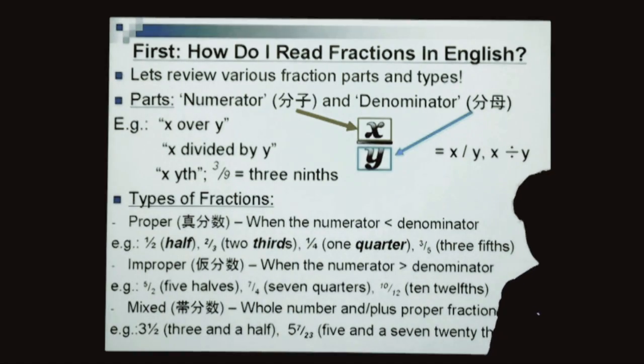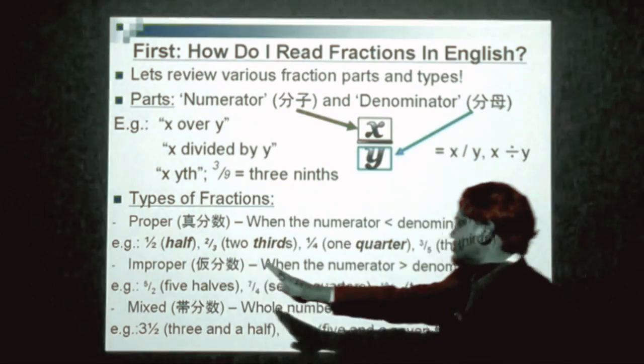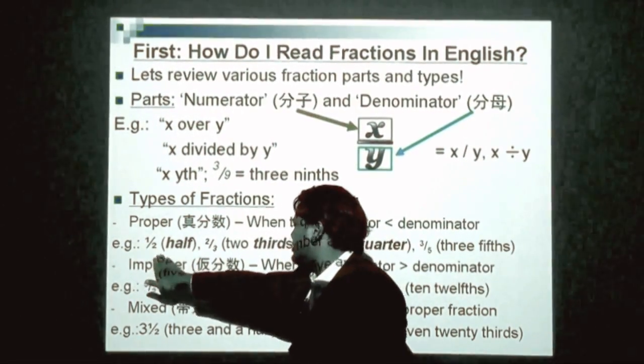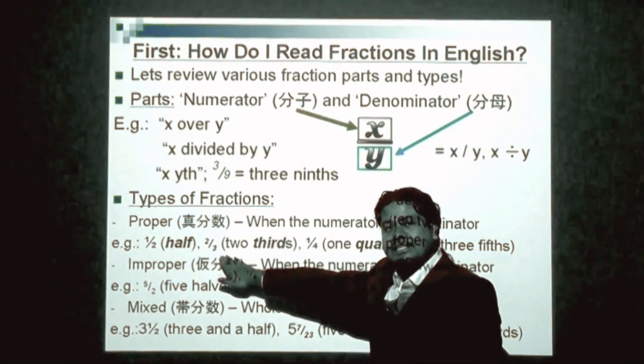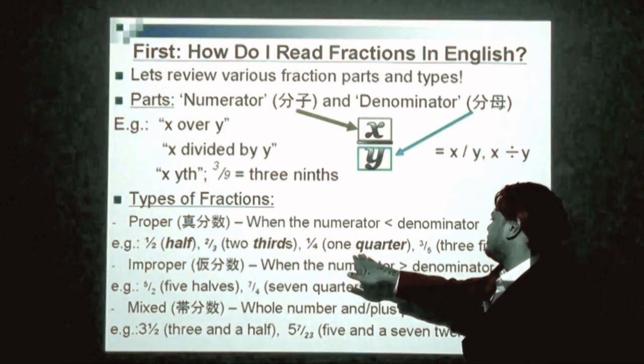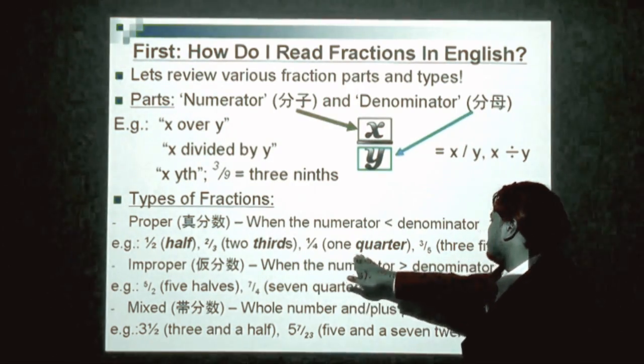So let's just move on. Another way to say a value with 2 as a denominator is half. Another way, 3 as a denominator is a third. And another way to say a fraction with 4 as a denominator is a quarter.